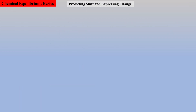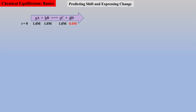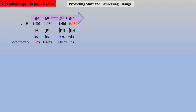Let's examine a few examples where we are asked to simply predict shift and express the change. In this first generic equilibrium, the initial concentrations are all 1 molar except for D, which is 0. Thus a Q calculation is not necessary, because we know the reaction must shift toward product D if a K value is to be obtained. This will cause the concentrations of reactants to drop and the concentration of products to increase. The change is expressed via the stoichiometric coefficients, and when combined with initial concentrations, the final expression of change is afforded.